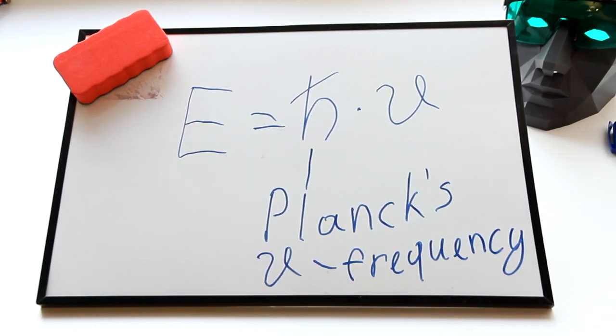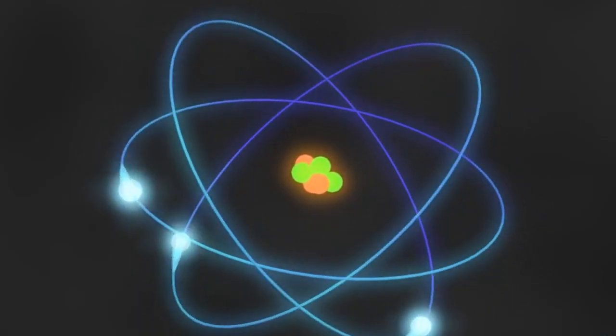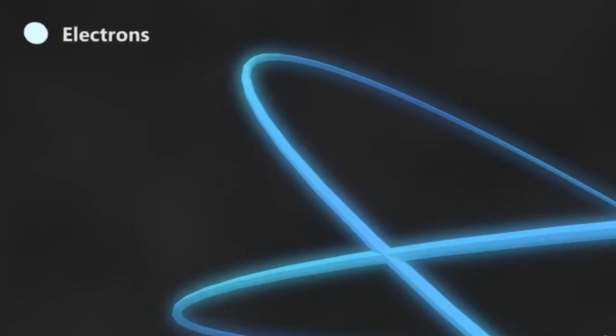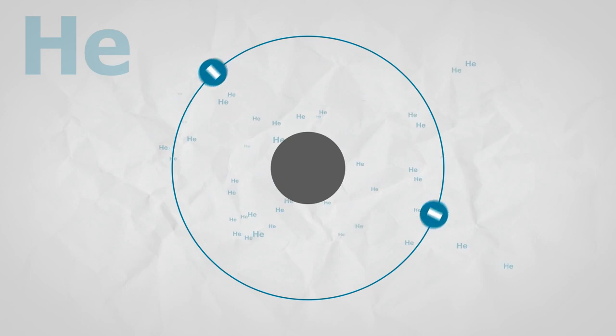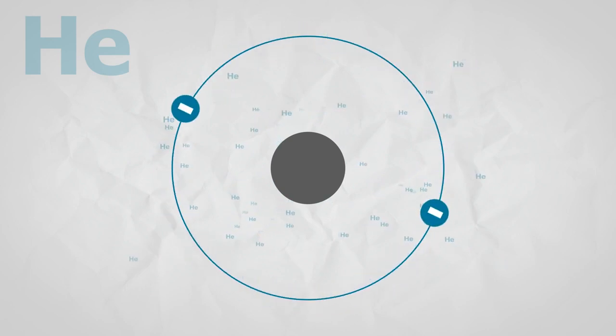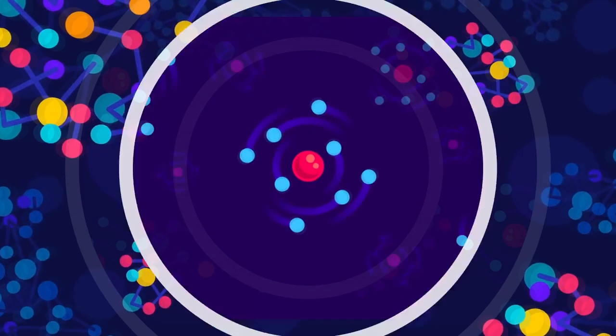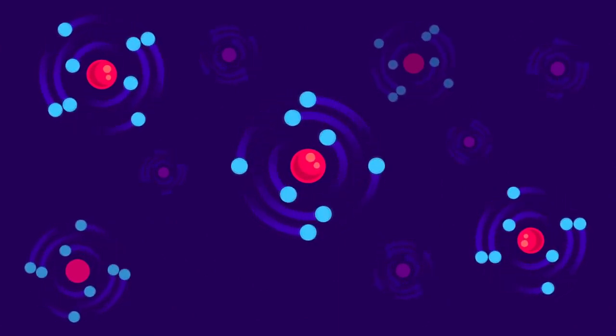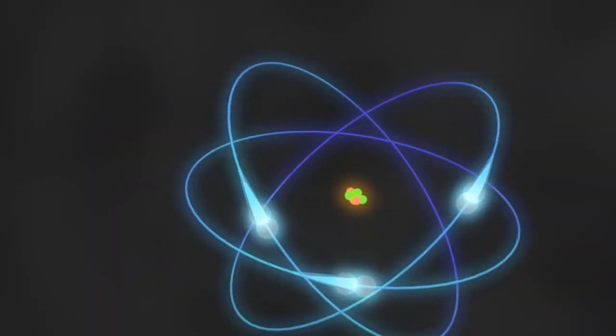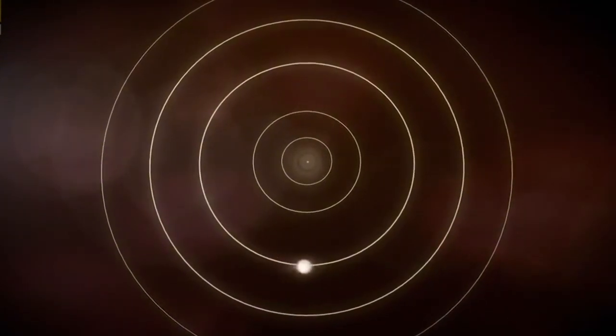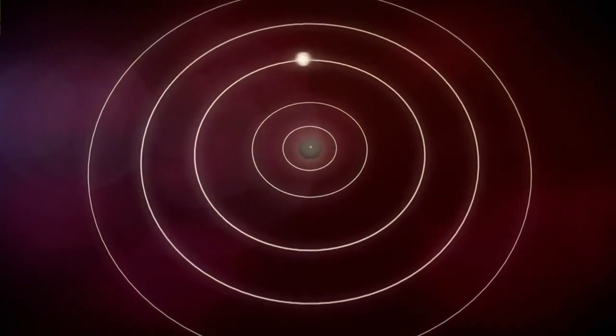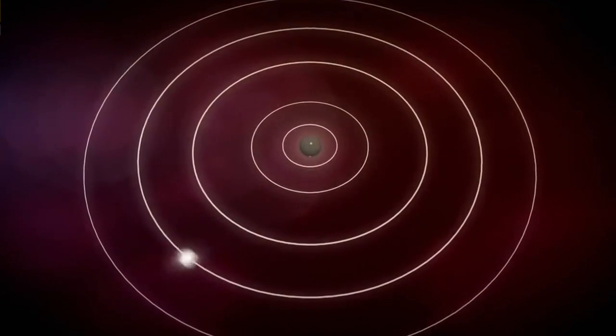In accordance with the laws of quantum mechanics, the electron energy bound in an atom cannot take random values. It has a certain discrete series of values E0, E1, E2, etc., called energy levels. The level with the lowest energy of the atom, E0, is called the ground level. The remaining levels E1, E2, etc. correspond to higher energy states when the atom is excited. Under certain conditions, an electron can make an abrupt transition from one energy level to another.